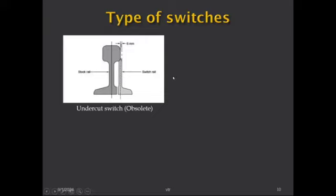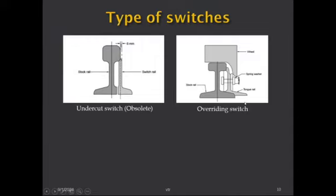They then moved to the overriding switch. In the overriding switch, the stock rail is not disturbed at all — it remains as strong as it is. Only the tongue rail is planed and machined to accommodate and house properly with the stock rail. The tongue rail overrides the flange of the stock rail, with all planing and machining done only on the tongue rail.